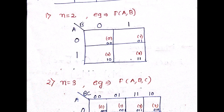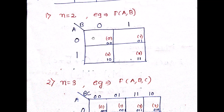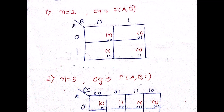For a two-variable K-map — function of A and B — the MSB term A comes on one axis and B comes on the other axis. A takes values 0 and 1, B takes values 0 and 1. The combinations give: 00 = 0, 01 = 1, 10 = 2, 11 = 3.